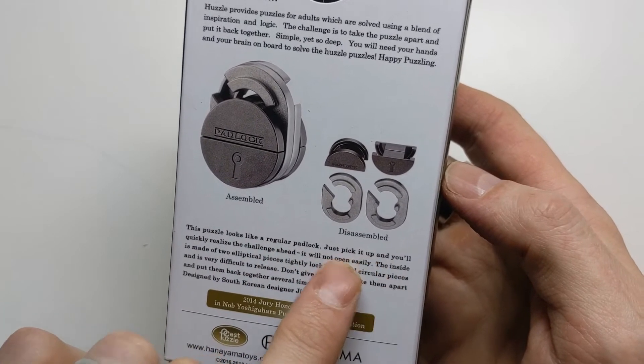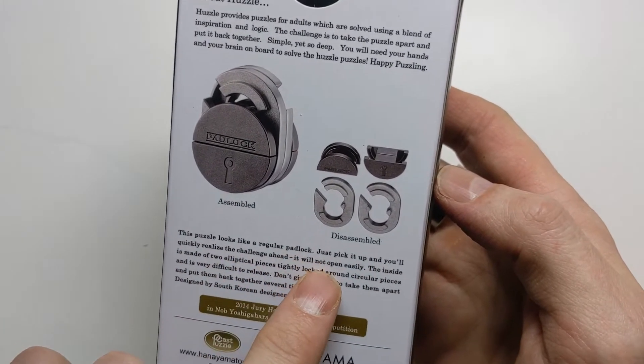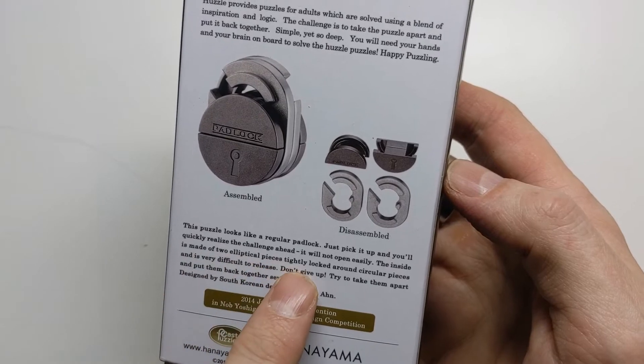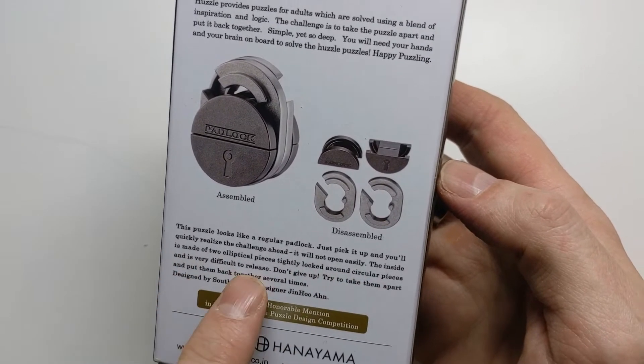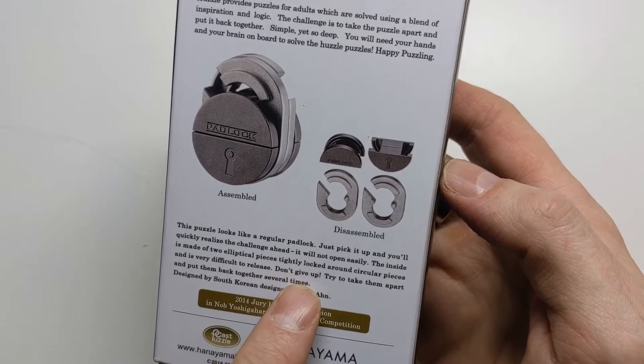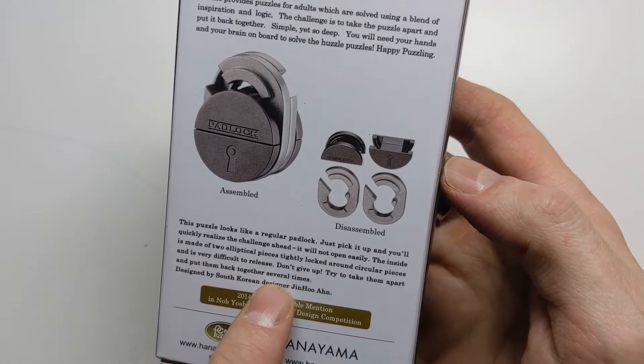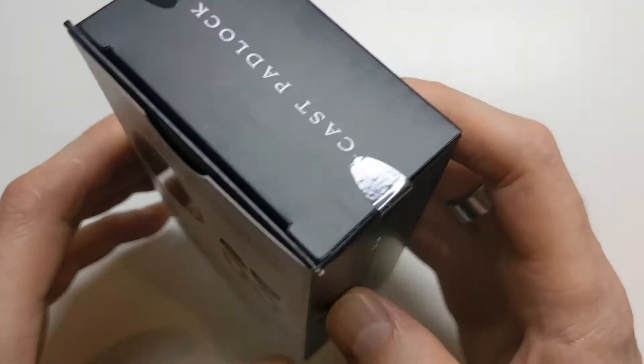It looks like a regular puzzle, just pick it up and you'll quickly realize the challenge ahead. It will not open easily. The inside is made of two elliptical pieces tightly locked around circular pieces and is very difficult to release. Don't give up, try to take them apart and put them back together several times. All right, well this is exciting, so let's see what we have in here.